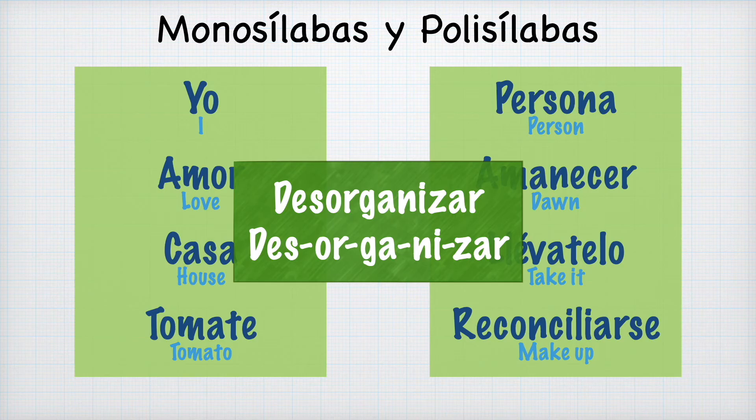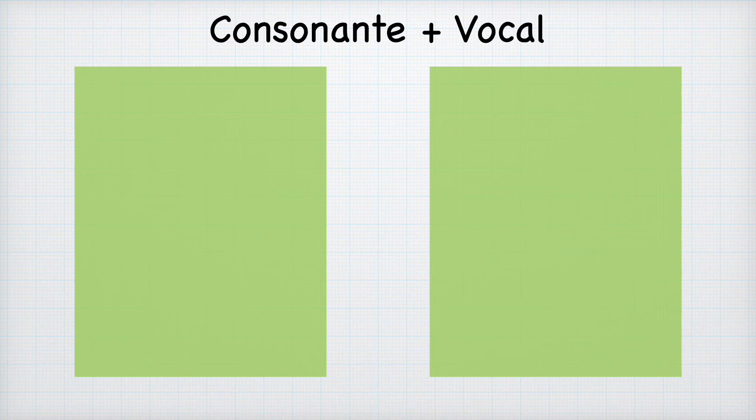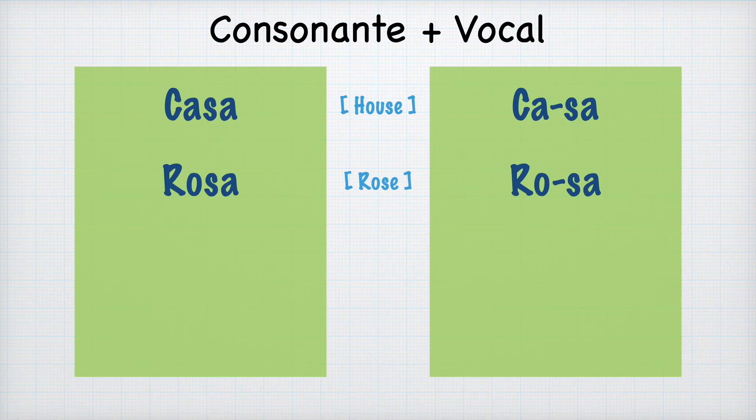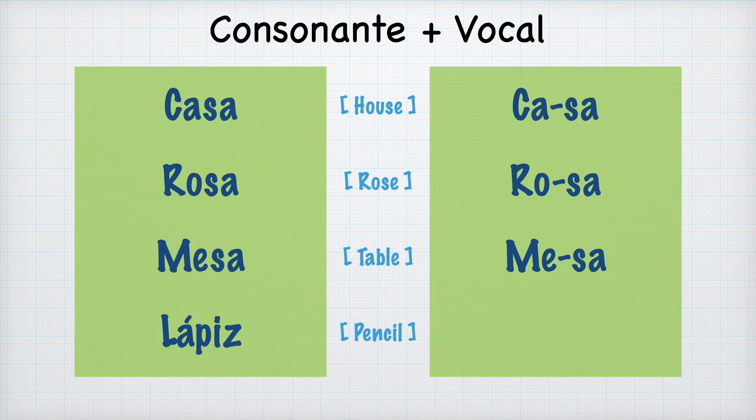The most common structure is consonant plus vowel. For example, casa has two syllables: ca-sa. Rosa — same structure, consonant plus vowel. Mesa, same. And lapis — here we see consonant plus vowel, and then consonant, vowel, consonant.